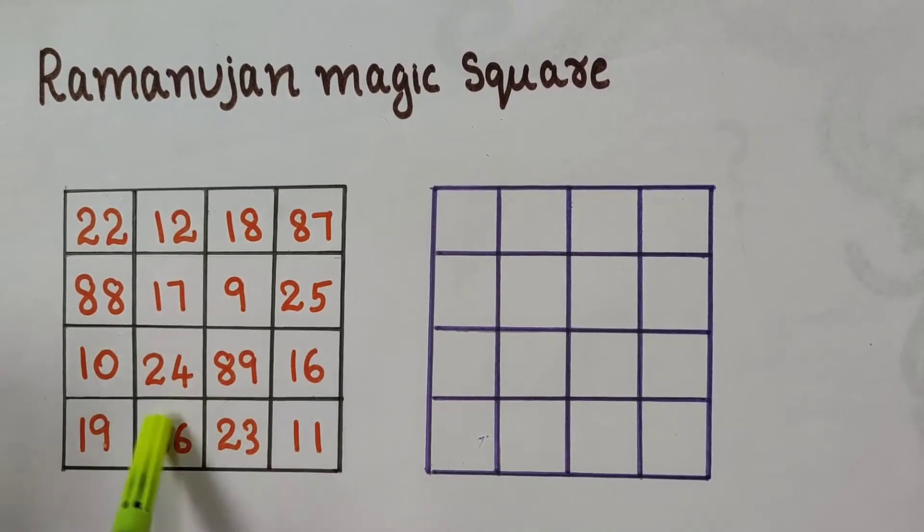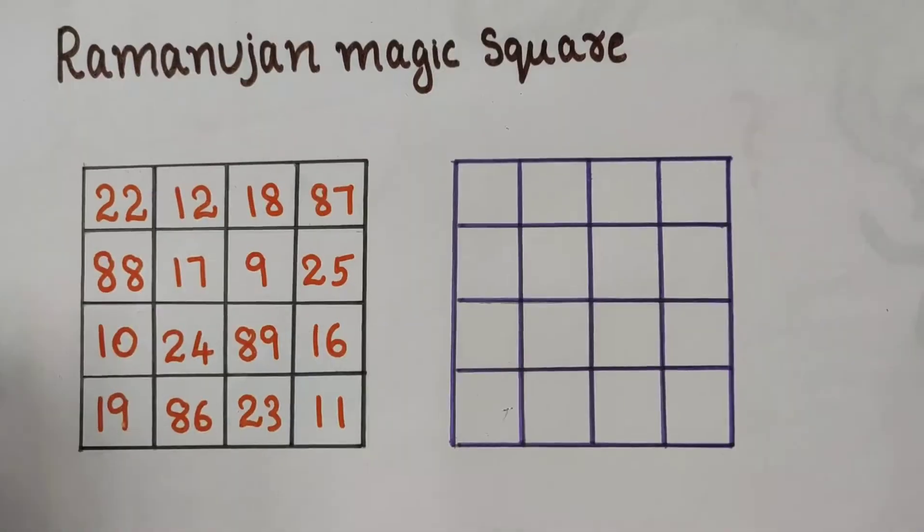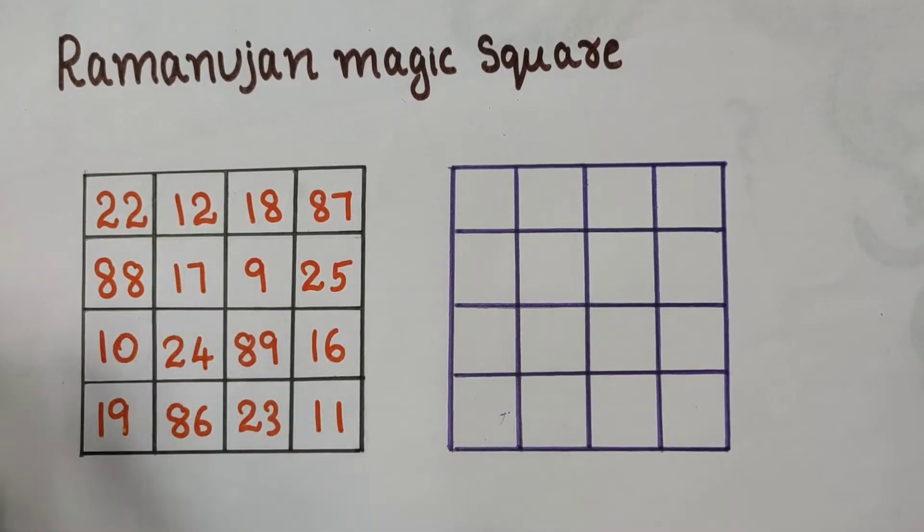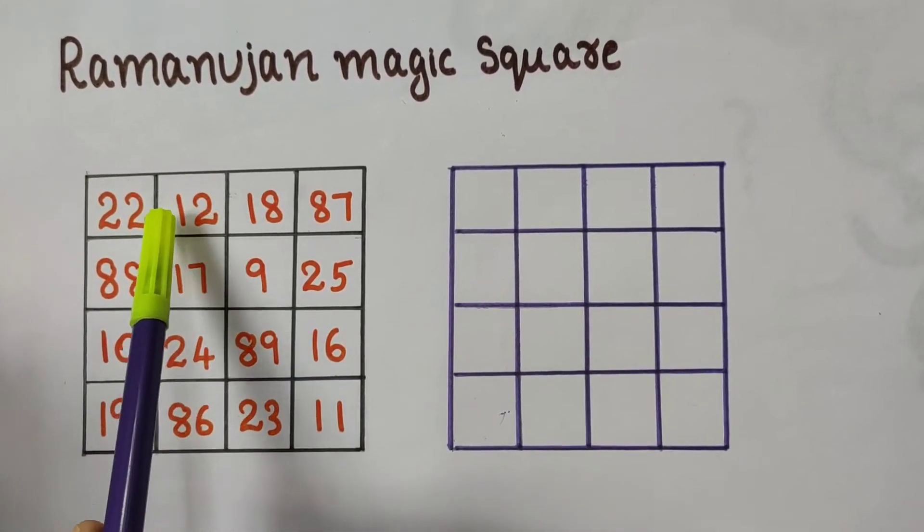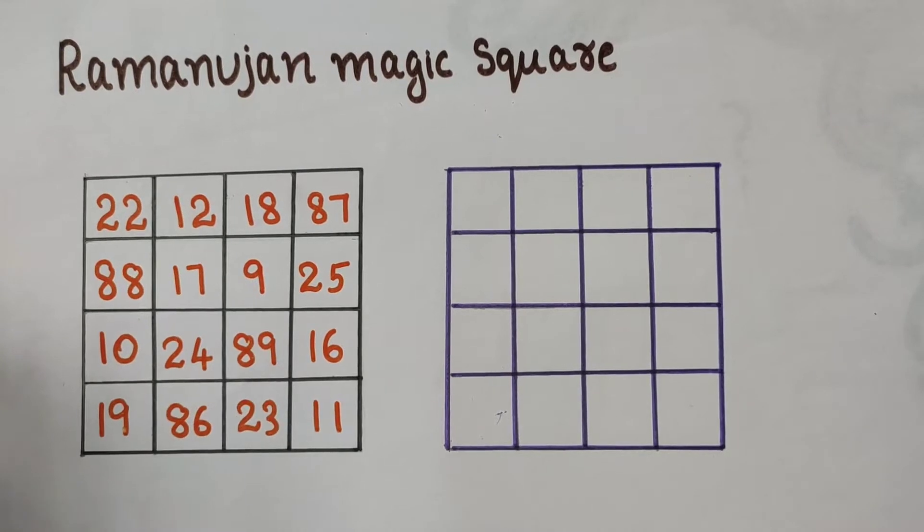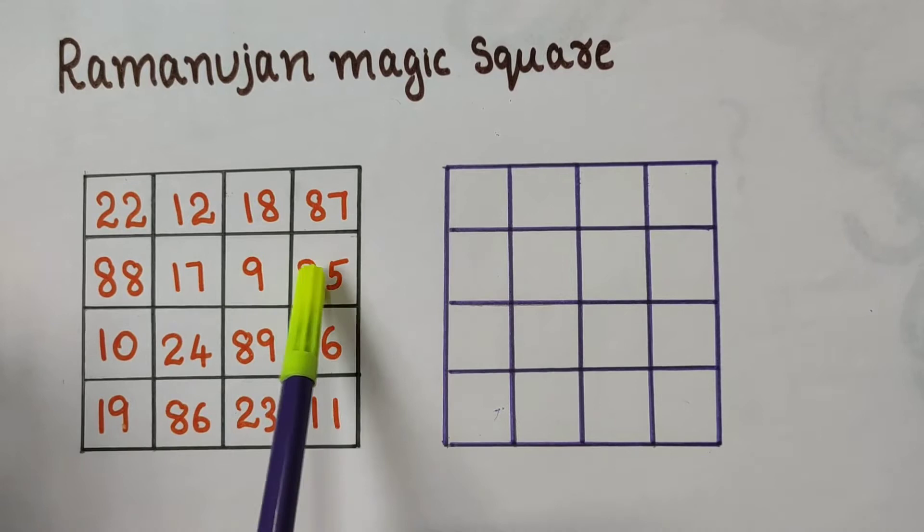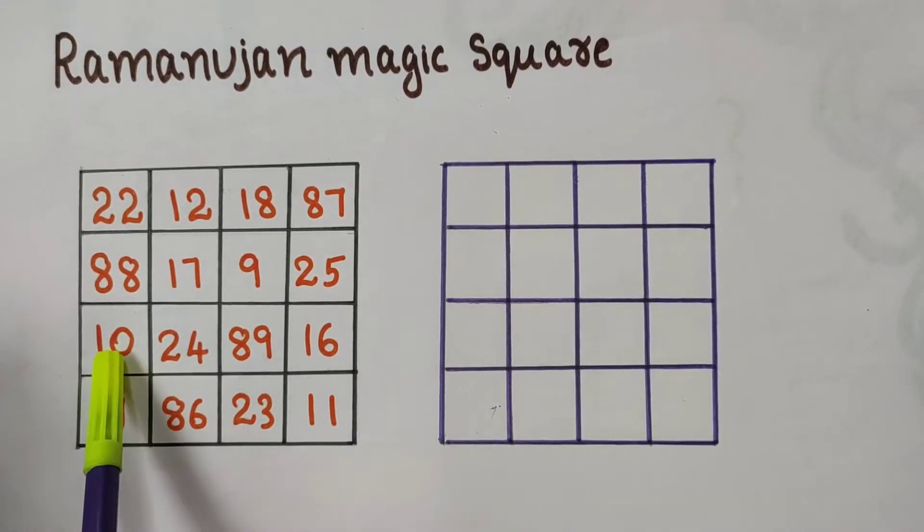And sum of 18, 25, 10, 86 is 139. Consider this square containing 22, 12, 88, and 17. The sum of these numbers is 139. This is a square containing 18, 87, 9, 25. The sum of these numbers is 139.